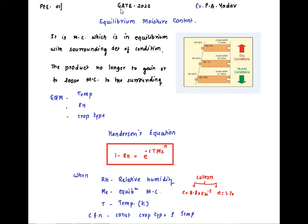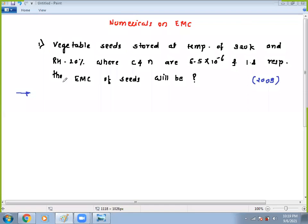I hope you understand the theory. Now ready for the numerical. We are going to see the numericals on equilibrium moisture content. The first problem: vegetable seeds stored at an absolute temperature of 320 Kelvin, relative humidity was 20%, and C and N values are given. Find the EMC of the seeds. There is only one formula applicable — Henderson's equation. In 2009 it was asked in the GATE examination.